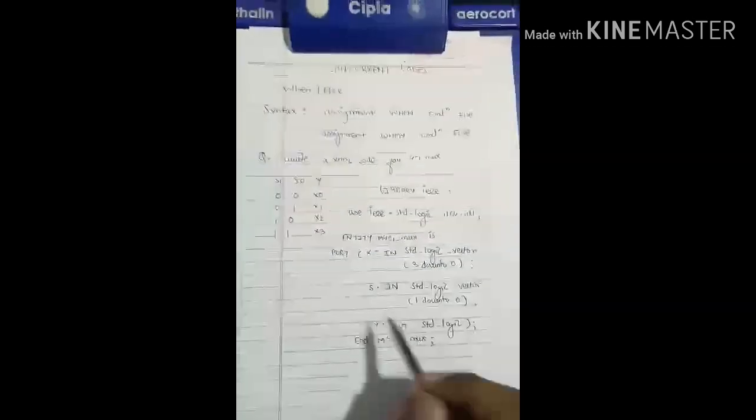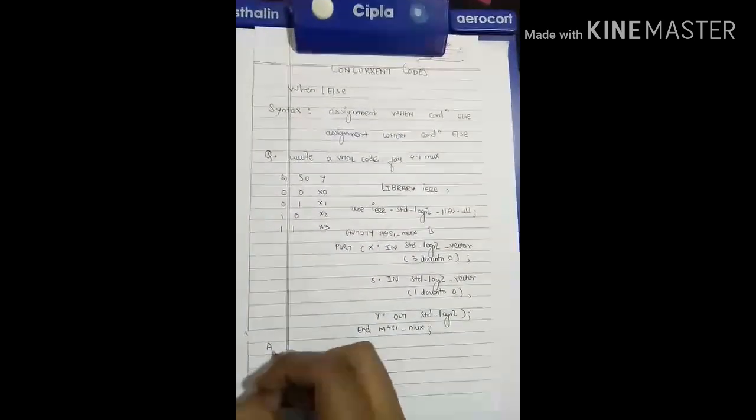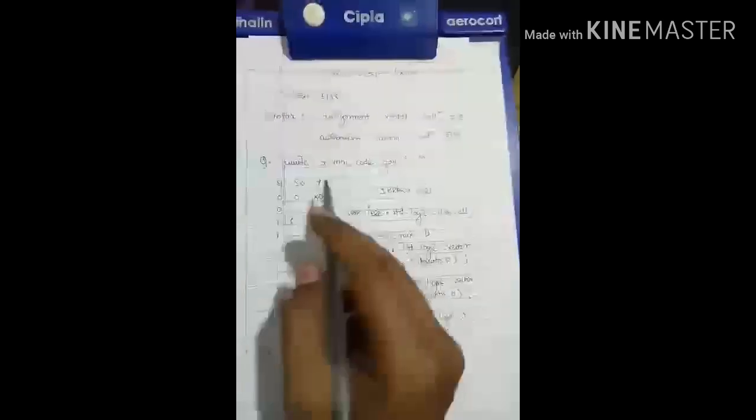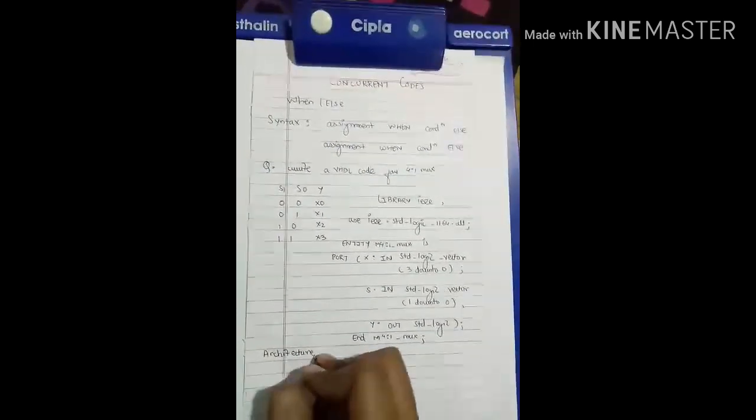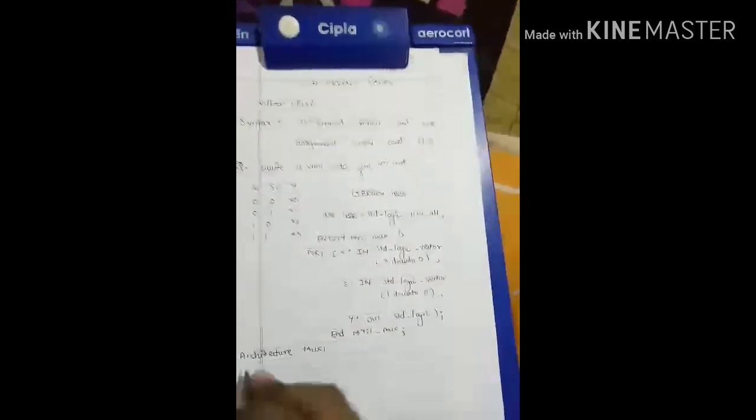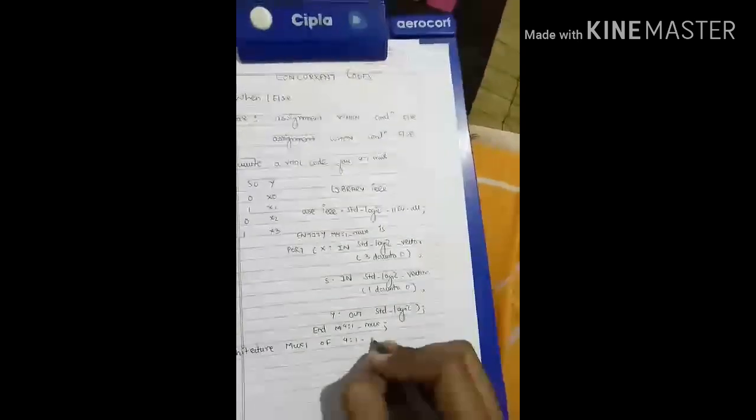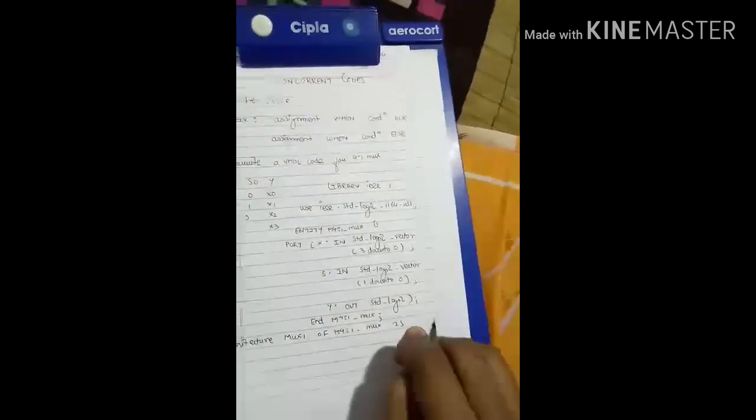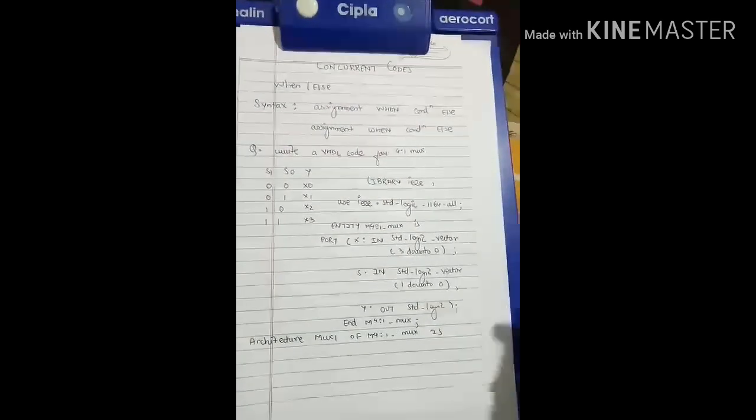Now I want to write an architecture. To write an architecture you need to first describe the syntax. The syntax of the architecture for the VHDL code of 4-to-1 MUX is: architecture mux1 of m4_to_1_MUX is. Now we are writing in the behavioral style of modeling so we need to write begin.